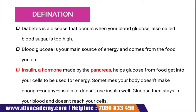Diabetes is a disease that occurs when your blood glucose, also called blood sugar, is too high. Blood glucose is your main source of energy and comes from the food you eat. Insulin, a hormone made by the pancreas, helps glucose from food get into your cells to be used for energy. Sometimes your body doesn't make enough insulin, or doesn't use insulin well, and glucose stays in your blood and does not reach your cells. Diabetes is also called a chronic disease.